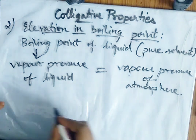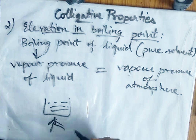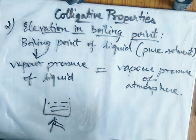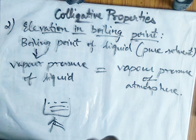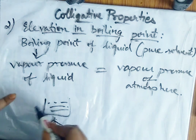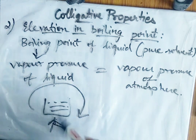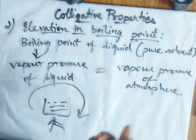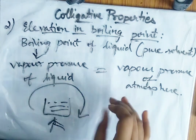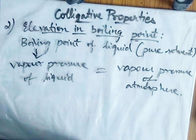Suppose we are taking a pure solvent and heating it. As temperature rises, the vapor pressure of the solvent also increases, and at a particular temperature the vapor pressure of the liquid becomes equal to the atmospheric pressure. That temperature is called the boiling point.